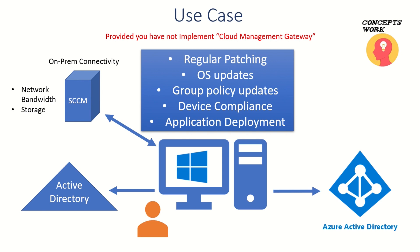Even if the user is working from home, they will get the updates and patches. Obviously, users will be using their own network bandwidth — they'll be using their own personal Wi-Fi because the network has switched from on-premises to their homes. There are certain things to keep in mind if you want to use this feature, because everything is moving towards cloud and we have to reach a stage where we remove all dependencies.